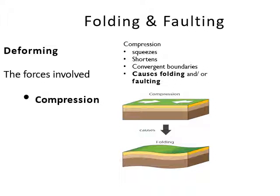Compression is going to shorten and squeeze the earth's crust. It's found at convergent plate boundaries. When compression happens enough, it will cause the fold to snap and bend and break so much that a little crack or a fault line will be created, and we refer to that as an overthrust fault.